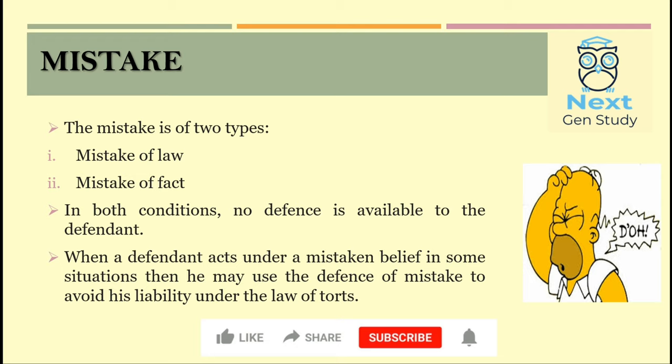Like in the master-servant relationship, vicarious liabilities arise. The master is liable for all the acts that a servant does during the due course of employment. But if the servant acts outside the limits for which he has not been authorized by the master and not in the course of employment, for such acts the master will not be liable, and vicarious liability of the master will not arise.